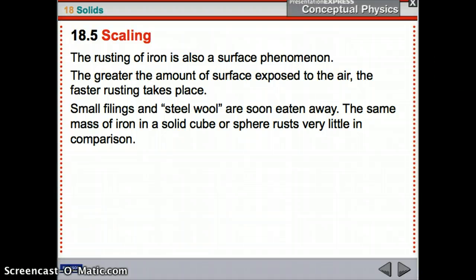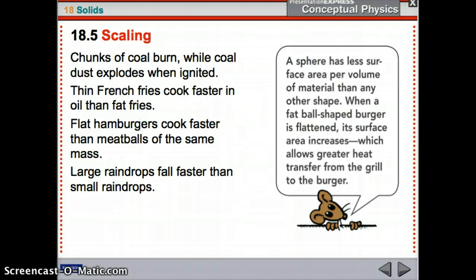Also, the rusting of iron occurs at the surface. So, if you have more surface exposed, rusting takes place faster. So, small filings and steel wool get eaten up because they have a lot of surface area. Whereas, if you have a solid cube of iron, it won't rust a whole lot in comparison. So, more examples. Chunks of coal burn while coal dust explodes. Thin french fries cook faster than fat french fries. Flat hamburgers cook faster than meatballs. Large raindrops fall faster than small raindrops. So, it's that surface area to volume. More volume, less surface area as you continue to grow. But, if you change it so that you get more surface area for the same amount of mass, then you will get either heat distribution better, or less rusting, or whatever it might be.